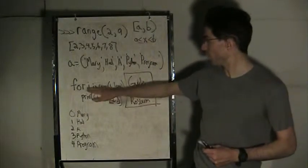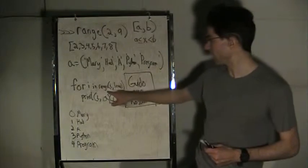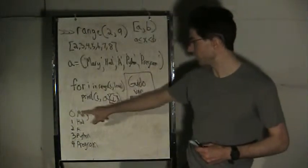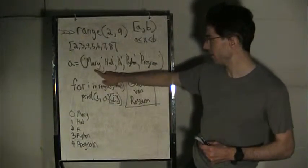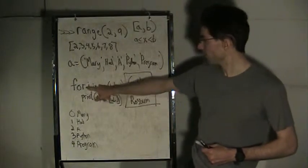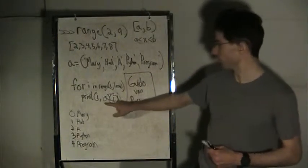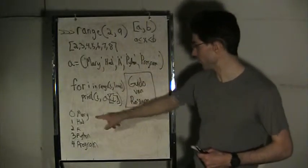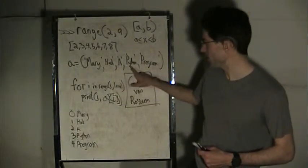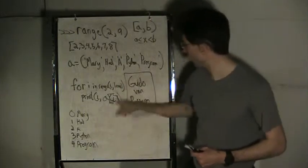So the output is going to be 4, 0 in range. Print 0, 0. And what's the 0th element? Mary. And then it moves on to 1. So it prints 1. And what's the 1-eth element? And then 2, A, 3, Python, 4, program.